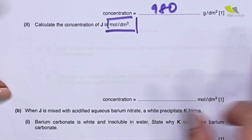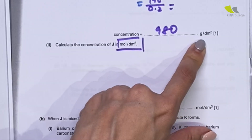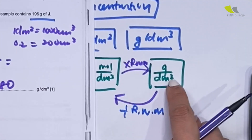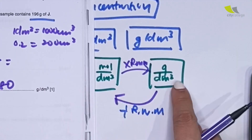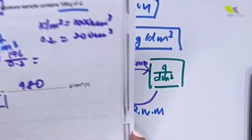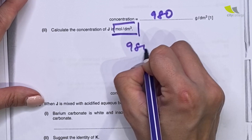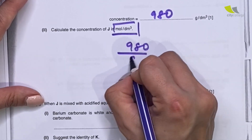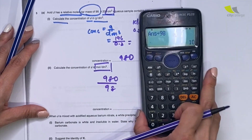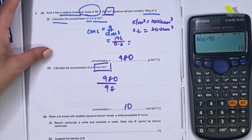Next, they ask for mole per dm³. How do I convert from gram per dm³ to mole per dm³? Gram to mole — follow the arrow — divide by RMM. RMM is given as 98. So I use 980 divided by 98 — notice the numbers work out perfectly — that gives a good 10 mole per dm³. I've finished the first part.